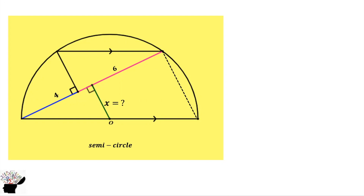If this side is X, what would be the value of this side? This is the radius R, and this is also the radius R, so we have 2R. And if this side is X, this side will also be 2X.